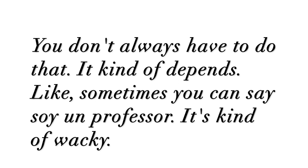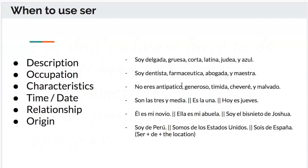For example: soy dentista, soy profesor. A farmacéutico is a pharmacist and an abogado is a lawyer. For characteristics: eres antipático, generoso, tímida, chévere, malvado — meaning unfriendly, generous, shy, cool, evil. For time and date: son las tres y media, es la una, hoy es martes. I'll have another video on telling time later because it's very complicated in Spanish.